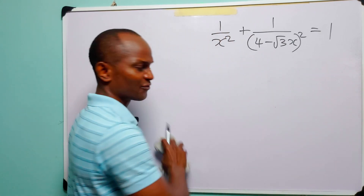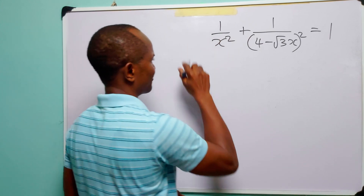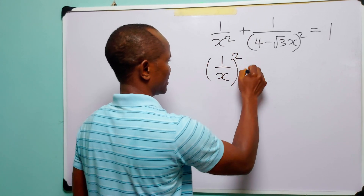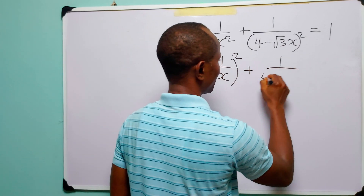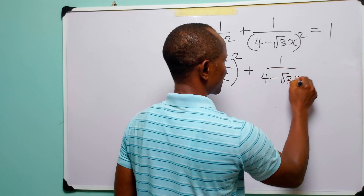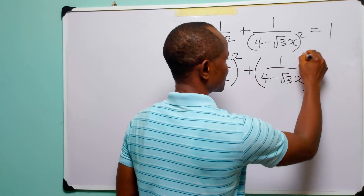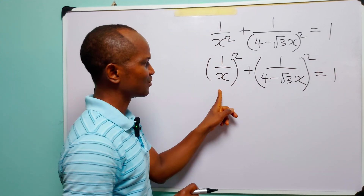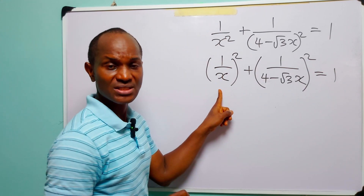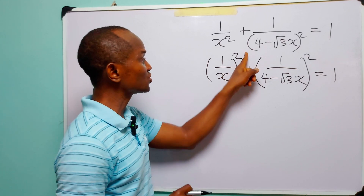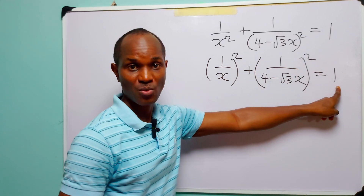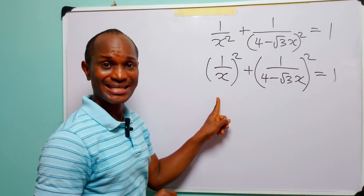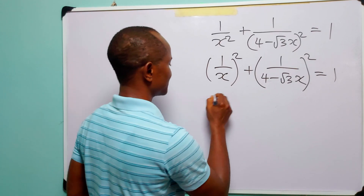From our studies of indices, you know that we can write this equation as one over x squared plus one over four minus root three x, all squared, is equal to one. Written in this way it is easier for us to see that we are dealing with two squares that add up to one, and also it brings to mind another mathematical identity.